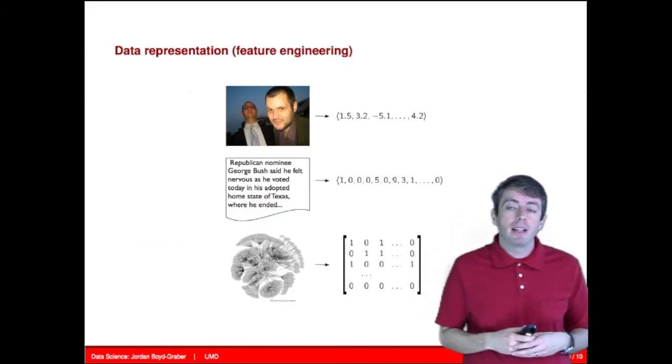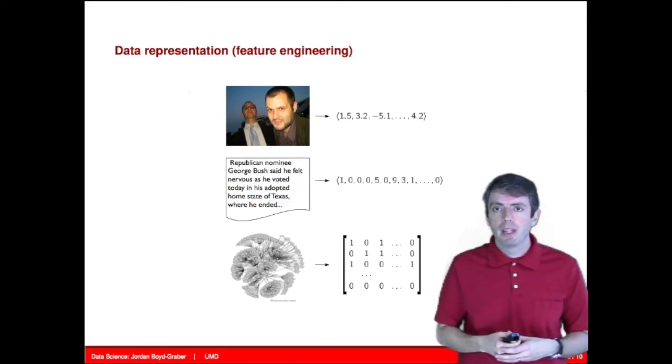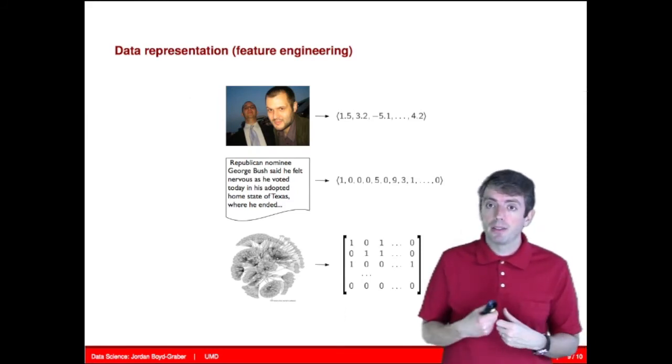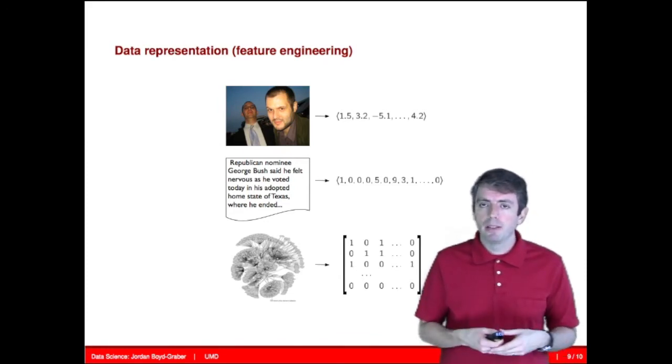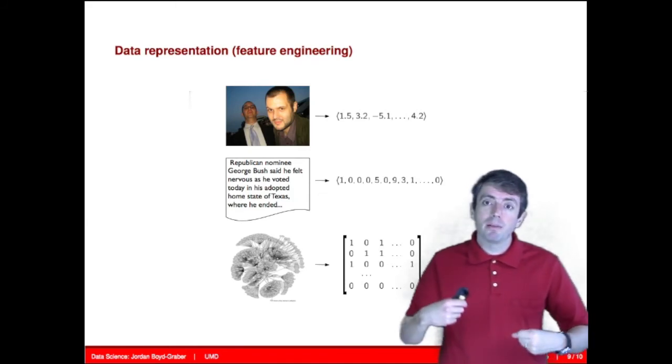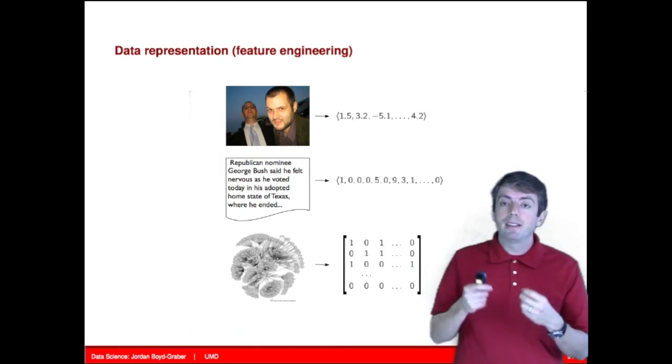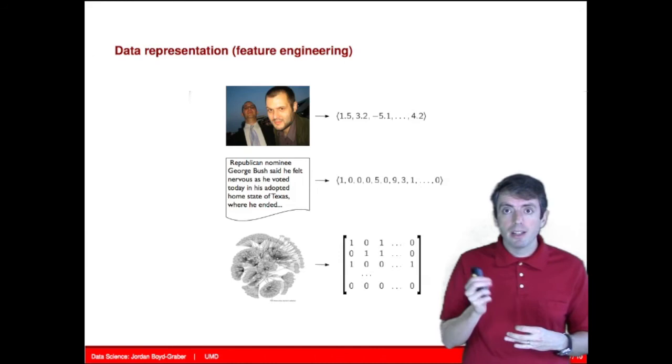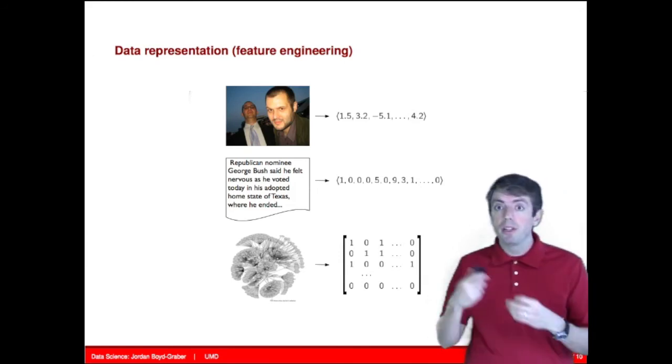Another important thing that we'll address in this class is how to actually represent data on a computer. A lot of the data that we'll talk about are unstructured. You get a raw image, you get a raw document, and you need to turn that into a form that a computer can use. Doing so is more of an art than a science, and data science is often about creating representations that are useful, efficient, and are easily understood by both a human and a computer.